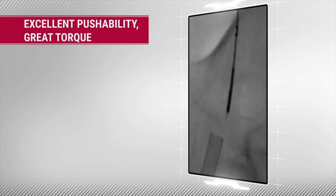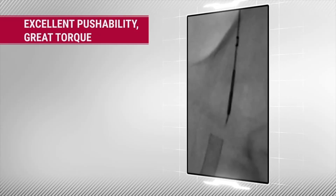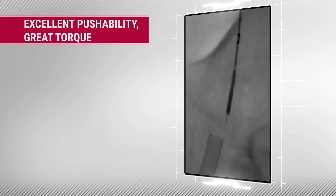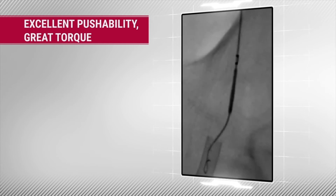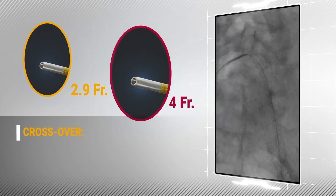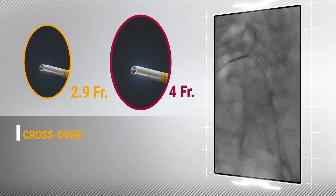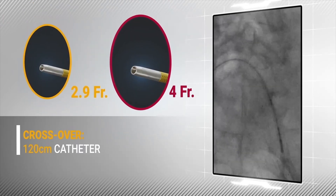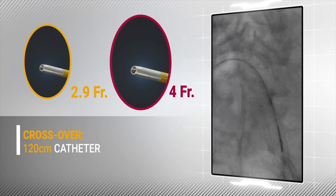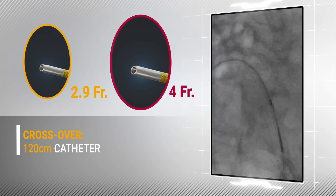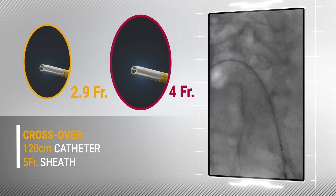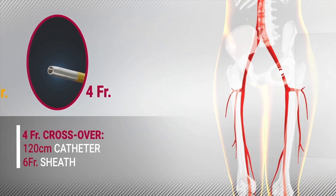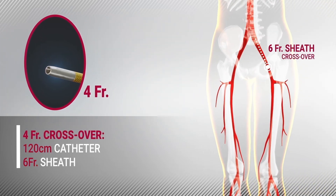The B-back has great pushability and torqueability to get through occluded stents and long calcified lesions. For the crossover approach, the 120 cm length B-back catheter would be advised. Select either the 2.9 French B-back with the 5 French sheath, or the 4 French B-back with the 6 French sheath.